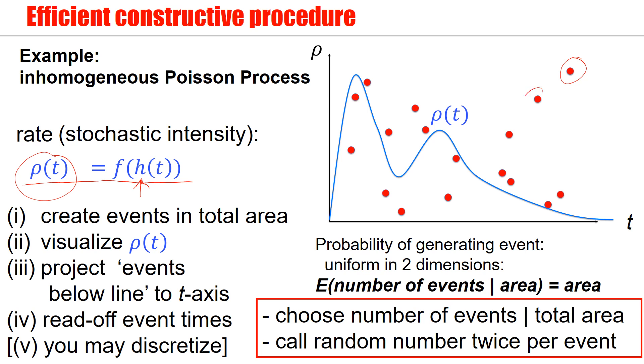So the trick now is, I first generated my red points. And then later, I can paste in my time-dependent rate or stochastic intensity, rho of t. First we generate the points, then we paste in this rho of t. And now we project all events below the line to the axis. So all events in this area below the line are projected downward. And all this is done in continuous time. Only much later, you may decide to discretize.